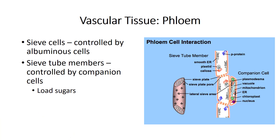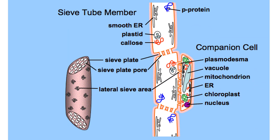The nuclei of sieve elements degenerate, and no complex metabolism occurs without the nucleus. So sieve elements are associated with neighboring cells that exert nuclear control — the brain of the combo. Sieve cells are associated with albuminous cells, and sieve tube members are controlled by companion cells. Companion cells are involved in sugar loading into sieve tubes and are often smaller than the accompanying conducting cell, with a prominent nucleus and dense cytoplasm filled with ribosomes.